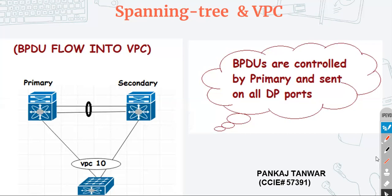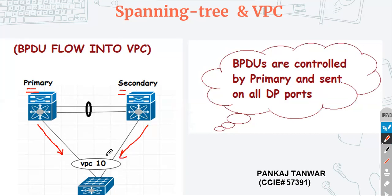Let's see what is the behavior of BPDUs in the case of VPC peer switch feature. On the left hand side we have the same topology with the primary switch and the secondary switch. In VPC peer switch, both devices are going to send BPDUs to the downstream devices. If a downstream device sends BPDUs to the secondary device, there is no need to forward them to the primary device. Your downstream device is going to receive two duplicate BPDUs.